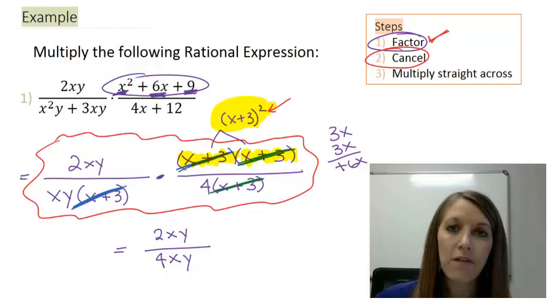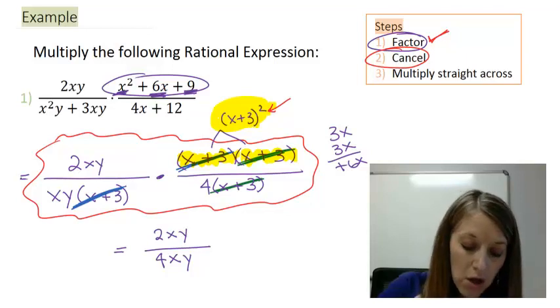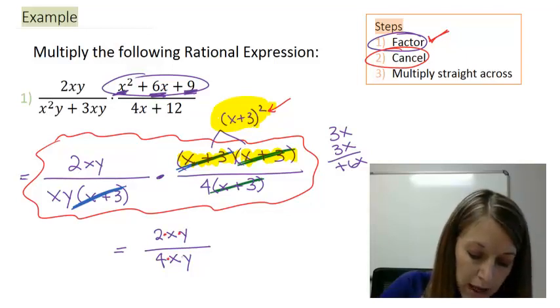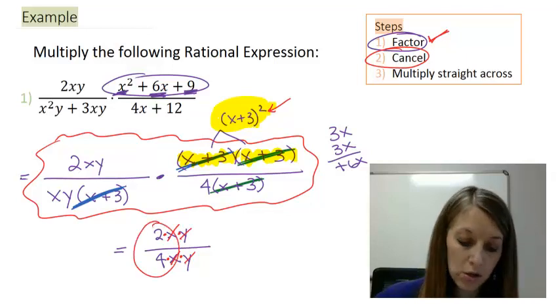Alright, looking at what I have left, double checking to make sure that I have canceled everything, and I actually have not. Notice that this is still all in multiplication form. So I can cancel these x's, and I can cancel these y's, and I can reduce my 2 over 4.